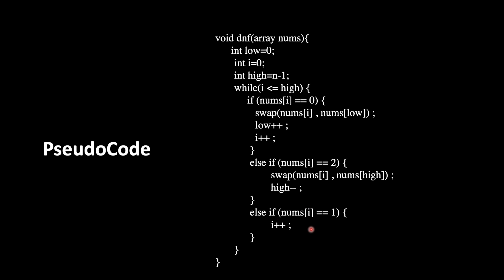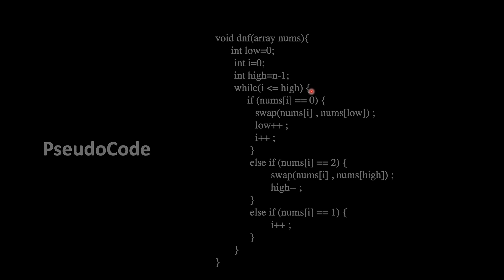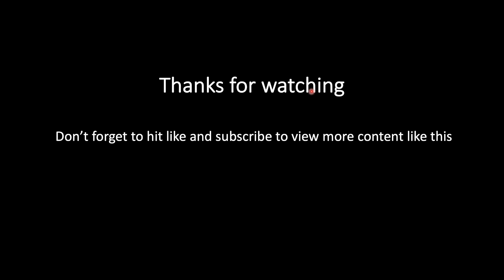If we got one, we just continue — no action needed. This loop runs until i is less than or equal to high, because after high all elements are two and are already at the correct position — no point traversing there. So this was DNF sort. Thanks for watching, don't forget to hit like and subscribe to view more content like this.